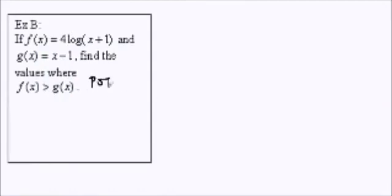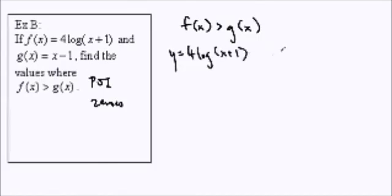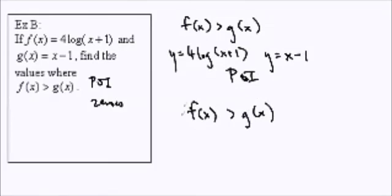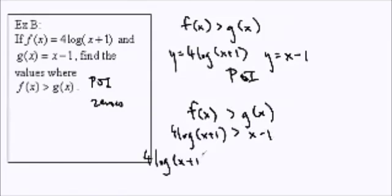We're going to use the point of intersection, or find zeros. It depends whether you want to have it on two sides, or move it all over. We could graph y equals 4 log(x + 1) and y equals x minus 1, and find the point of intersection. Or we can do f(x) minus g(x) greater than zero, which gives us 4 log(x + 1) minus (x - 1) greater than zero. We want to know when it's positive in the graph.